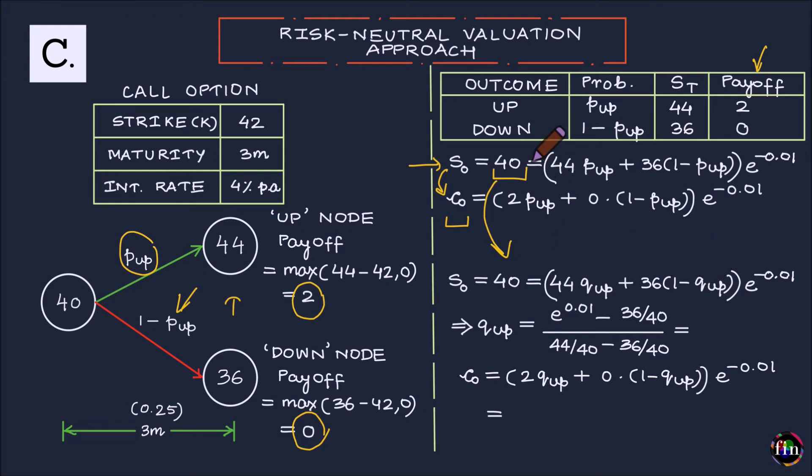But you will have to make one change. And that is, when you move from the real world to the risk neutral world, you will have to accept this, that the P up has to be replaced with a hypothetical Q up. A hypothetical probability, let's call it the risk neutral probability of moving up to the up node.